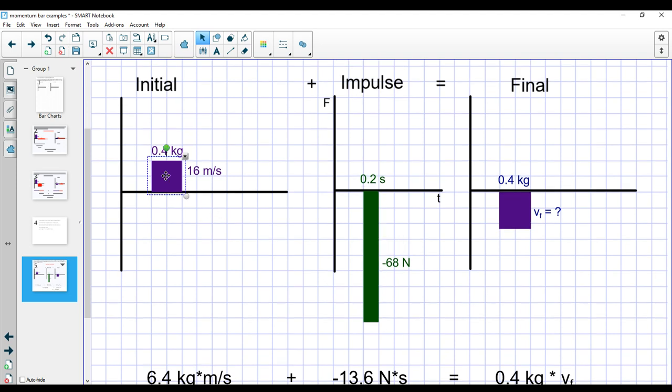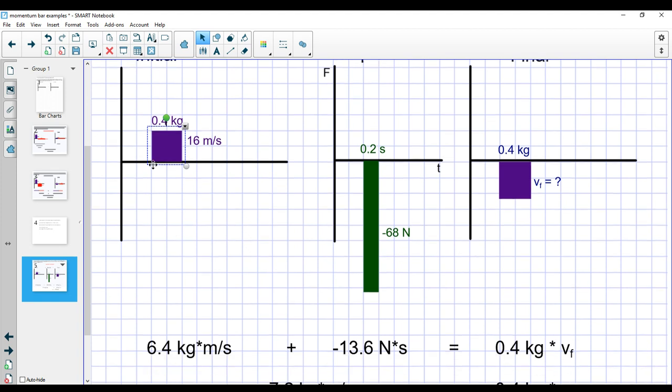So if I take my starting momentum and I can do that math, 0.4 kilograms times 16 meters per second gives me 6.4 kilogram meters per second. Plus I've got a change of 0.2 seconds times negative 68 newtons means that the momentum of the system changed by negative 13.6 newton seconds or negative 13.6 kilogram meters per second.